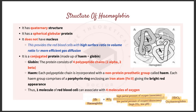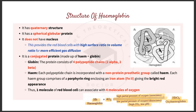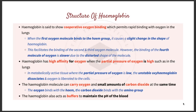Each heme group comprises a porphyrin ring enclosing an iron atom (Fe²⁺), giving the bright red appearance. So one hemoglobin molecule can associate with four molecules of oxygen. To summarize: hemoglobin has four chains — two alpha, two beta — each with a heme group containing a porphyrin ring and Fe²⁺. When combined, one hemoglobin molecule can bind four molecules of oxygen to form oxyhemoglobin.